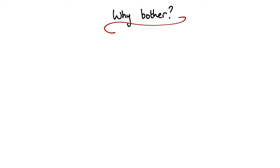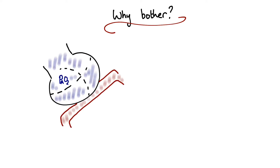It's worth pausing at this point to say why are we bothering with all of this? Fundamentally, the answer is that we need to try and work out what P big AO2 is, and that's the oxygen partial pressure within the alveoli. This is a really important number because it's a large part of what determines the extent to which oxygen diffuses from the alveoli into the pulmonary capillaries.